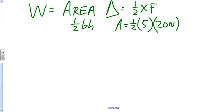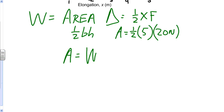Giving me area equals the total work done, which equals one half times 20 times 5, which equals 50. And the units of work are joules. And there we have it.